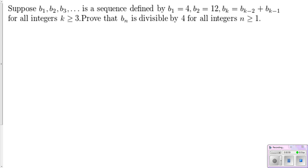Let's look at an example. Suppose b₁, b₂, b₃,... is a sequence defined by b₁ = 4, b₂ = 12, b_k = b_{k-2} + b_{k-1} for all integers k ≥ 3. Prove that b_n is divisible by 4 for all integers n ≥ 1. I'd like to show or pull your attention here to this component. As soon as you see we have what we call a second order relation because we have 1 and 2 previous terms involved, we have to use strong mathematical induction.